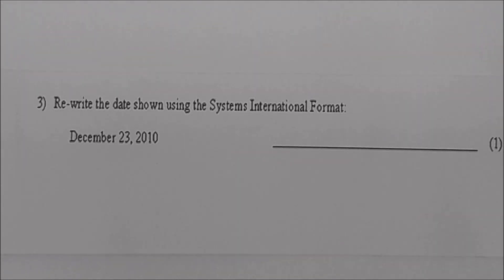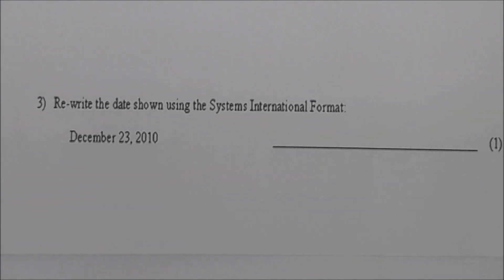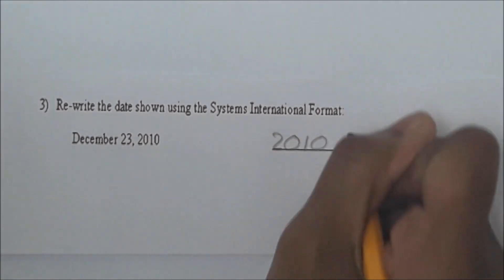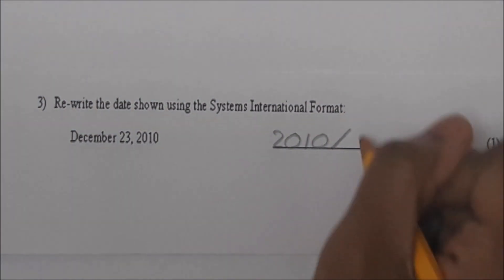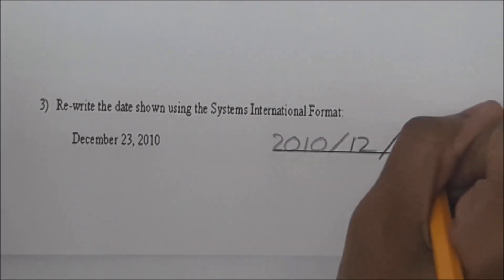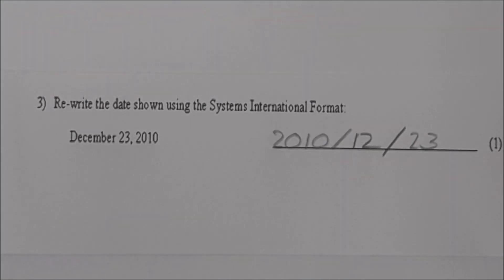Read number 3. Rewrite the date shown using the System International format — that's the short SI format. Read the date. December 23rd, 2010. Write it and tell us what you're doing. First I'm going to write the year, which is 2010, slash the month, which is December — 12 — slash the date, which is 23rd. Right. So you go from the largest, the year, to the smallest, the day. It's always year, month, date.